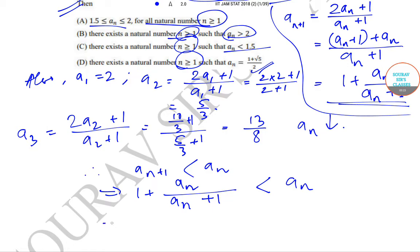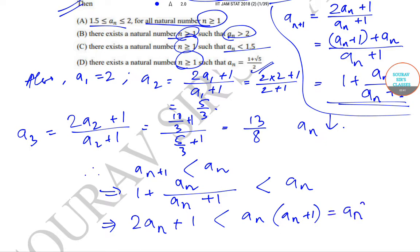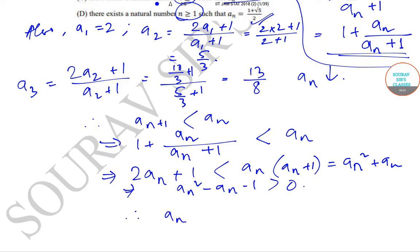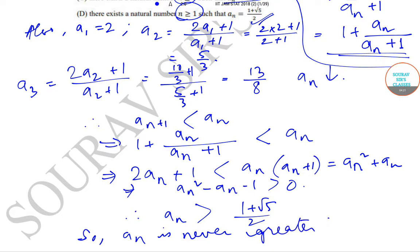Upon solving, this will give us that twice of a_n plus 1 is less than a_n squared plus a_n. This gives us a_n squared minus a_n minus 1 is greater than 0, which implies that a_n is always greater than (1 + √5) / 2. So a_n is never greater than 2.